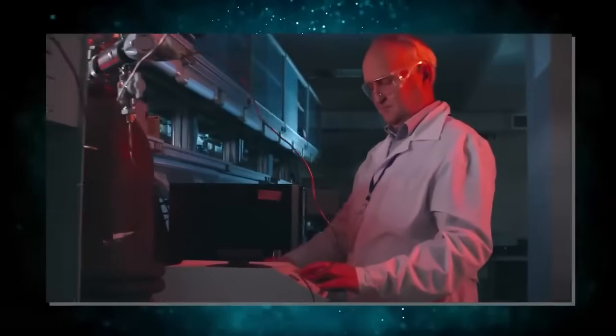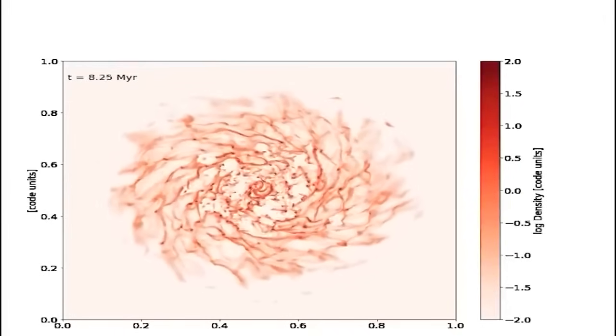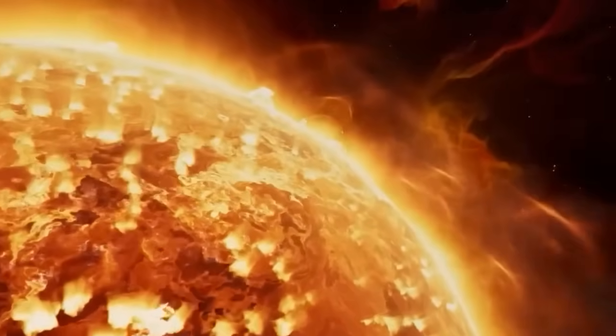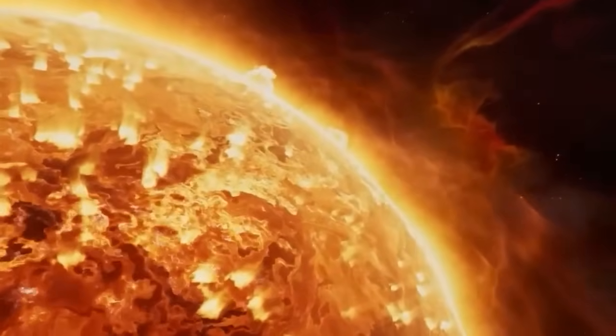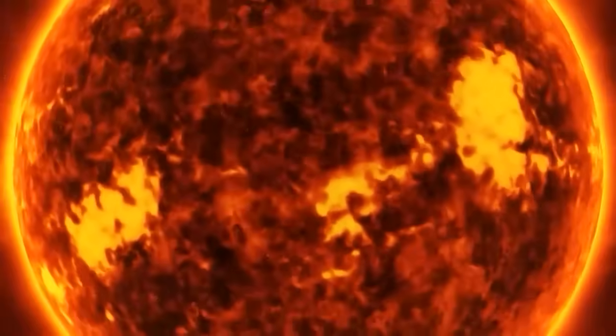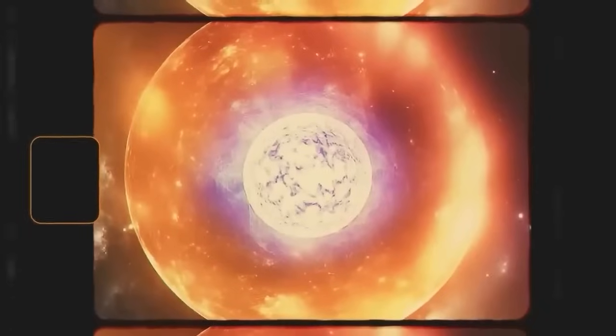Second, red supergiants are known for shedding massive amounts of material in their later stages. This process is crucial in shaping their evolution and eventual supernova explosions. Yet how they lose this mass, at what rate, and what triggers these outbursts, remains unclear. Betelgeuse, with its recent fluctuations, only adds to this prevailing uncertainty.